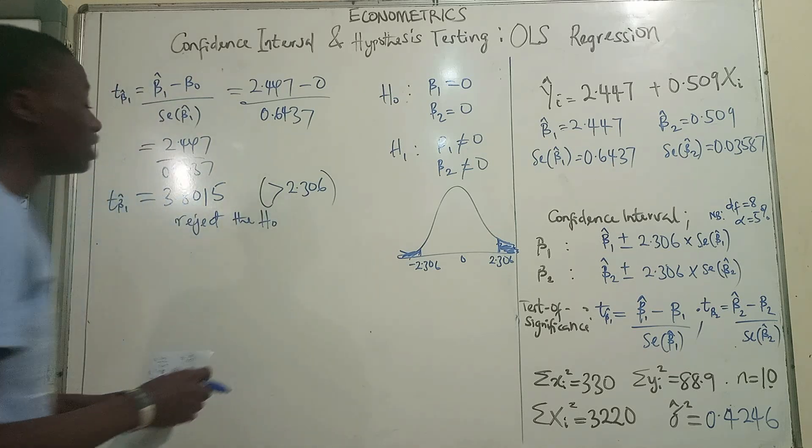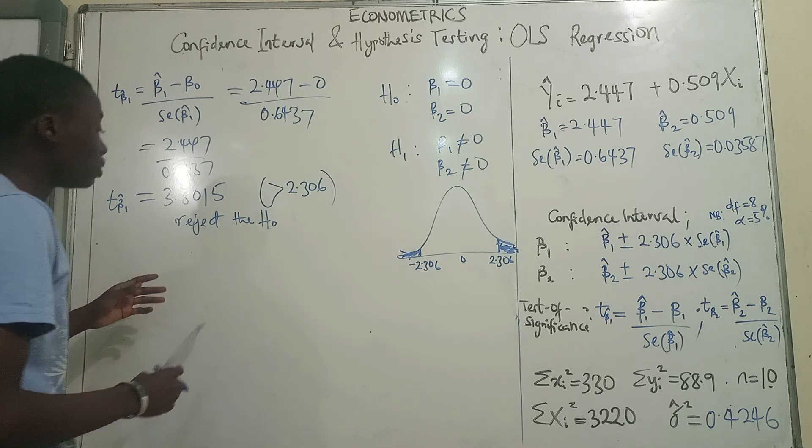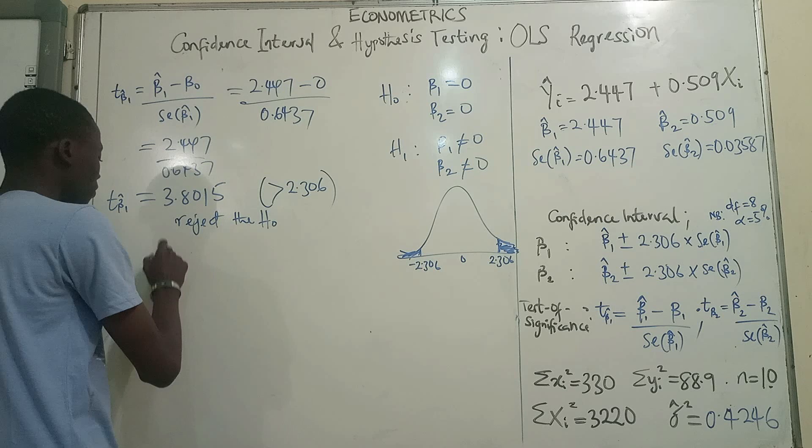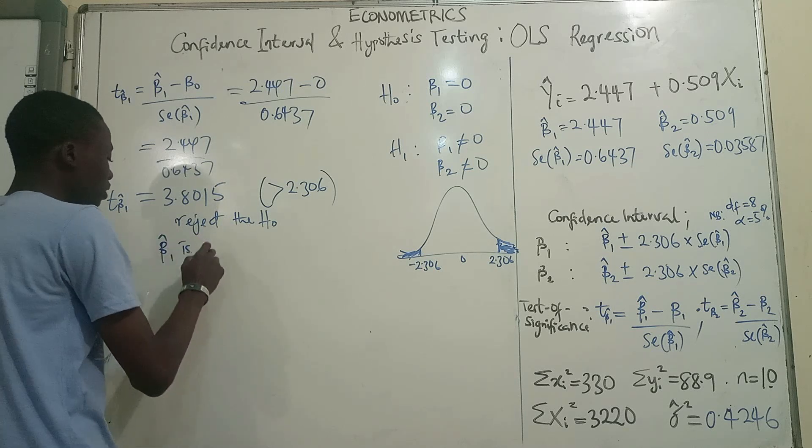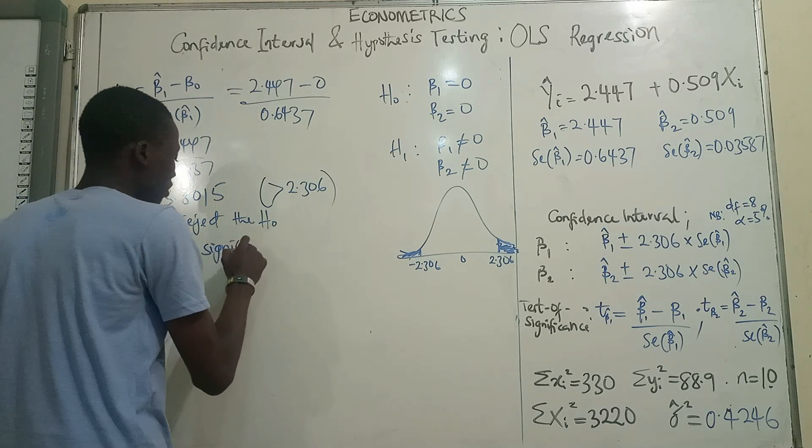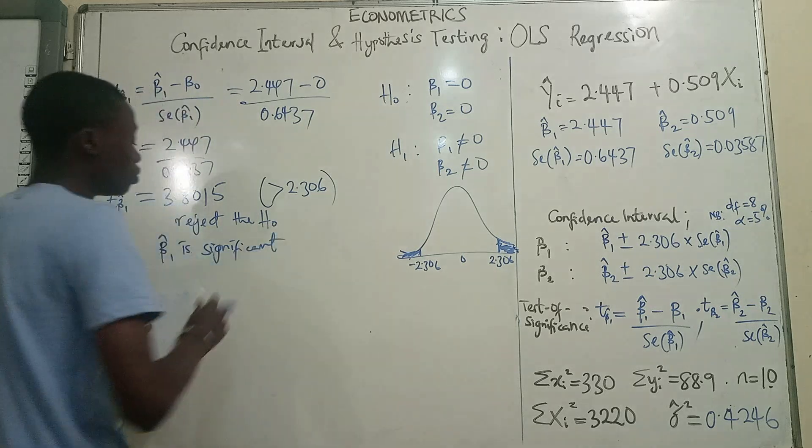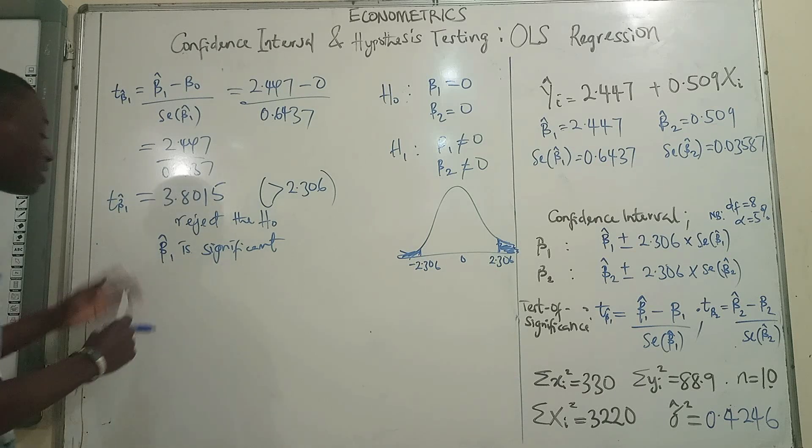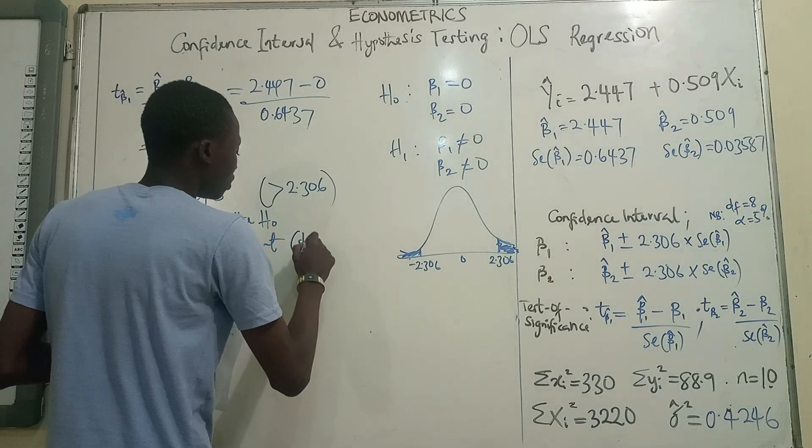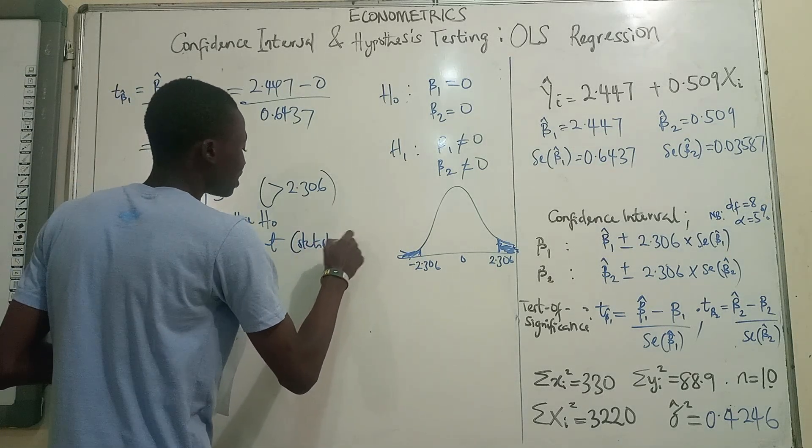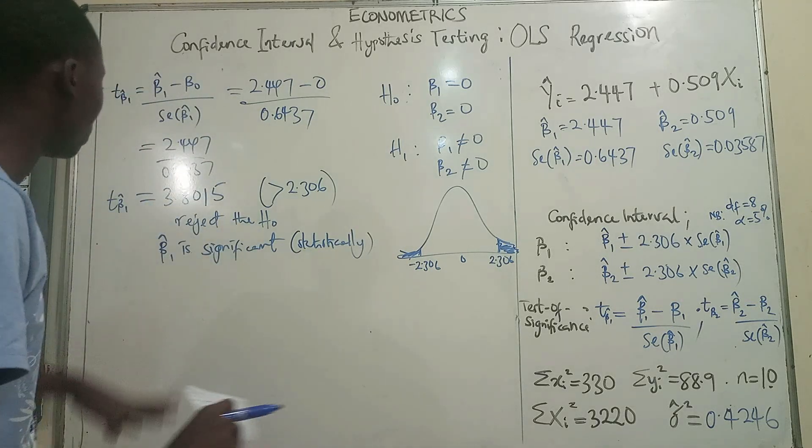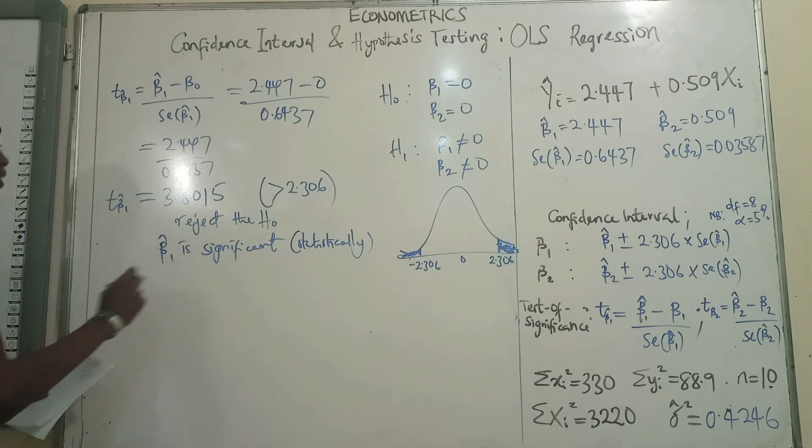That means we reject the null hypothesis. And when we reject the null hypothesis, we are saying that beta 1 is significant. We are rejecting that beta 1 is 0. It is statistically significant. Beta 1 is actually statistically significant. It is not 0. It is statistically significant.